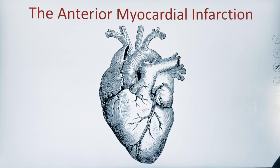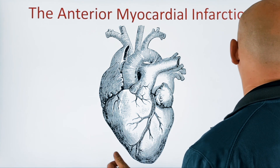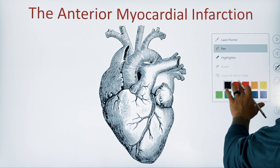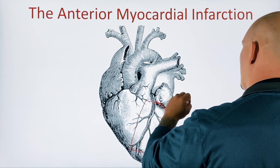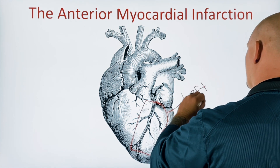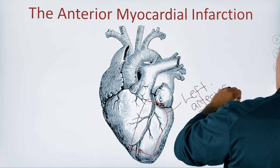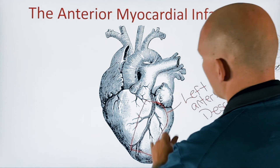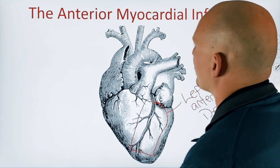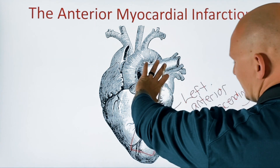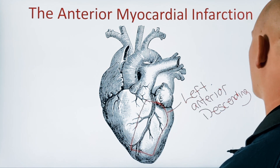The anterior myocardial infarction has a few pieces that could possibly be creating this problem. The vessel that's typically going to be affected is called the LAD, or the left anterior descending artery. It has a couple of branches — the D1 and D2 branches and so on — feeding a very large portion of the anterior parts of the heart.